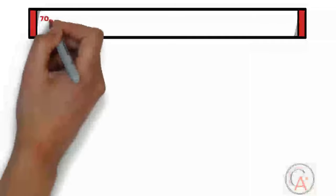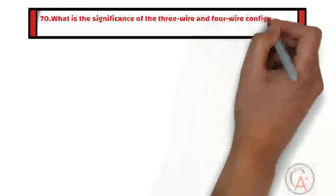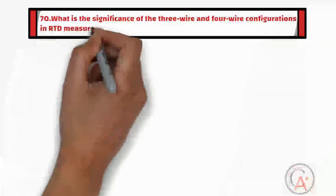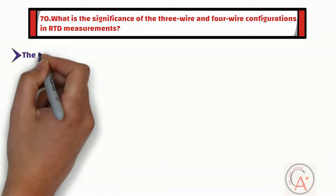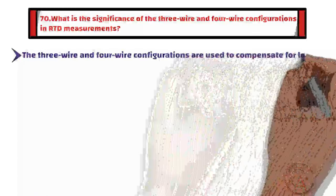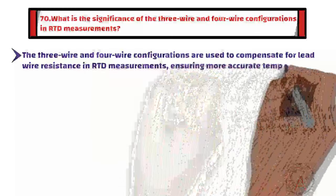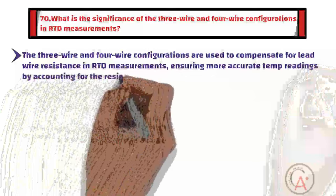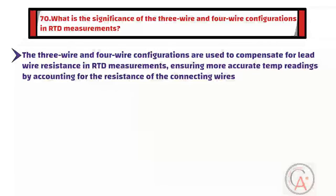Question seventy is: what is the significance of the three-wire and four-wire configurations in RTD measurements? The three-wire and four-wire configurations are used to compensate for lead wire resistance in RTD measurements, ensuring more accurate temperature readings by accounting for the resistance of the connecting wires.